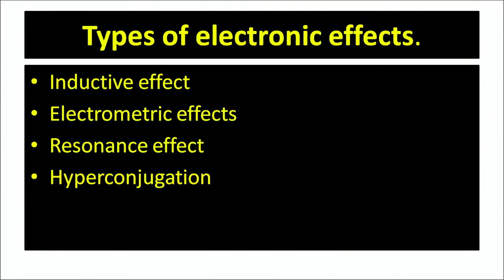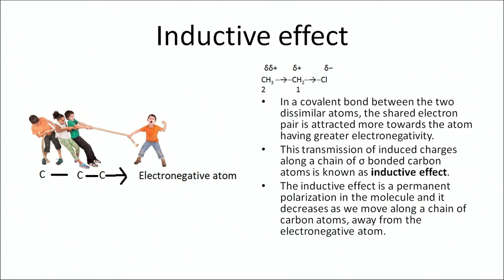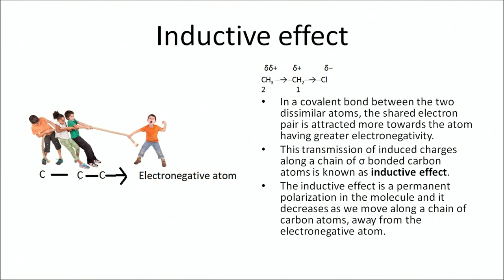There are four types of electronic effects: inductive effect, electromeric effect, resonance effect, and hyperconjugation. Let us understand the inductive effect. A useful analogy is a man pulling three others — because he has more power, representing an electronegative atom, as depicted by the molecule CH₃CH₂Cl. In a covalent bond between two dissimilar atoms, the shared electron pair is attracted more towards the electronegative atom, developing a polarity in the sigma bond. Such an effect is called the inductive effect, and it is a permanent effect.